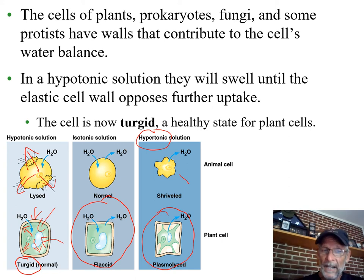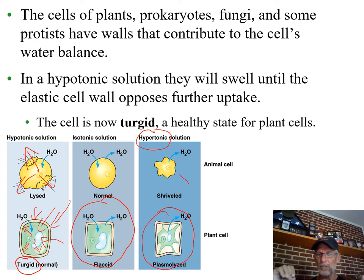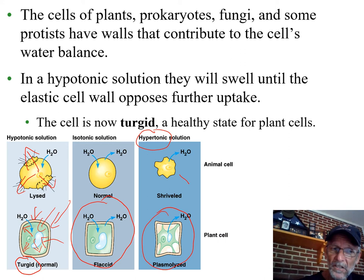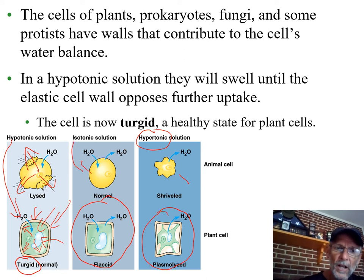For a plant made up of a whole bunch of cells, it's beneficial that every cell is nice and firm, because now you can stand up tall in competition for sunlight — that's an advantage. So the big difference between the desired state for plant cells is to be surrounded by a hypotonic, watery solution, compared to animal cells, where the ideal is to be surrounded by an isotonic solution.